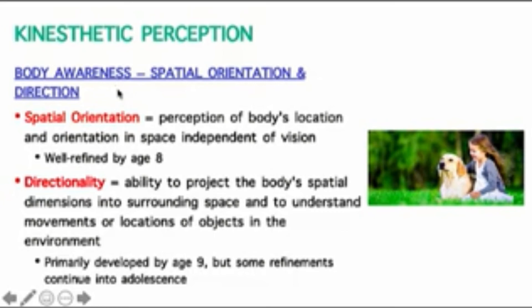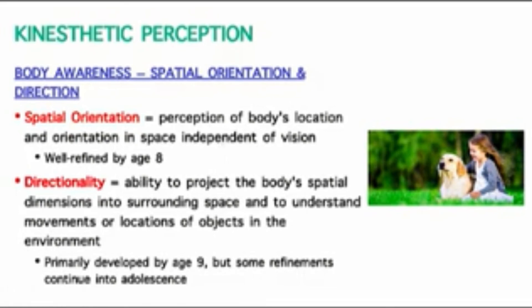We can also consider spatial orientation — the perception of a body's location and orientation in space independent of vision. That's pretty well defined by age eight. You can test spatial orientation by trying to walk in a straight line while blindfolded. Using tests that don't allow you to use vision gives you a good idea of a person's total kinesthetic perception instead of being influenced by vision.